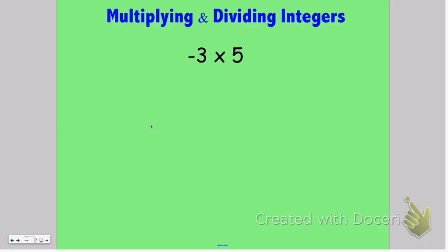The next problem we have is a negative three times five. We can also think of this as negative three groups of five, but that sort of doesn't make sense. So an easier way to look at this in my opinion is to think of this as the opposite of three groups of five.